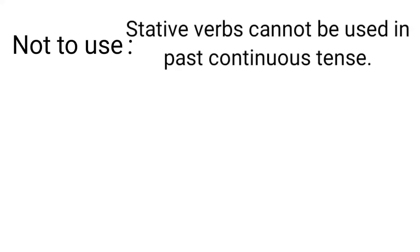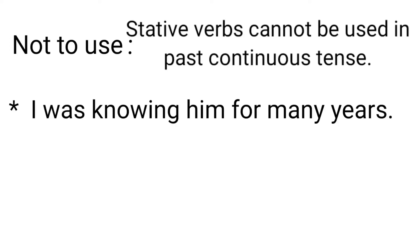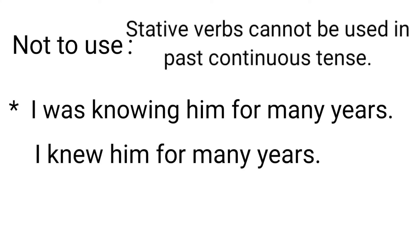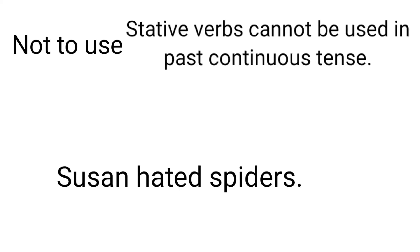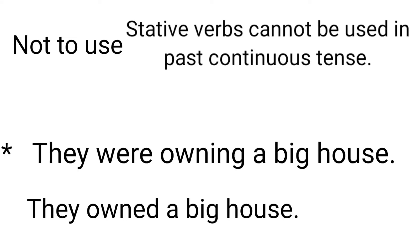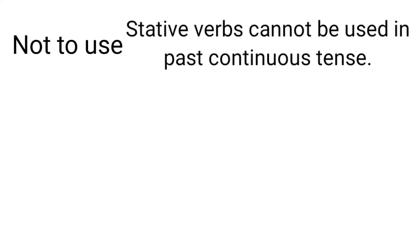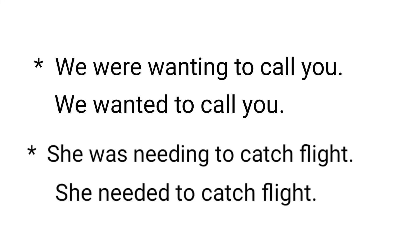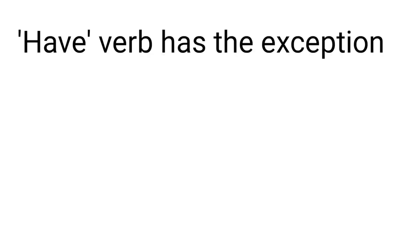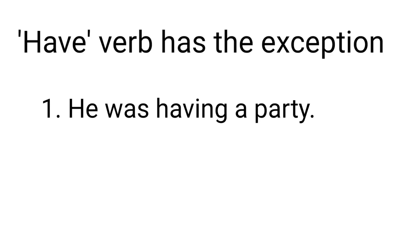There are two kinds of verbs in English: action verbs and stative verbs. Stative verbs describe a state or condition and cannot be used in the past continuous tense. For example: 'I was knowing him for many years' is incorrect — 'know' is a stative verb. Instead, say: I knew him for many years. 'Susan was hating spiders' is incorrect — say: Susan hated spiders. 'They were owning a big house' — say: They owned a big house. 'We were wanting to call you' — say: We wanted to call you. 'She was needing to catch a flight' — say: She needed to catch a flight. However, 'have' is an exception — for example: He was having a party. He was having a good time.